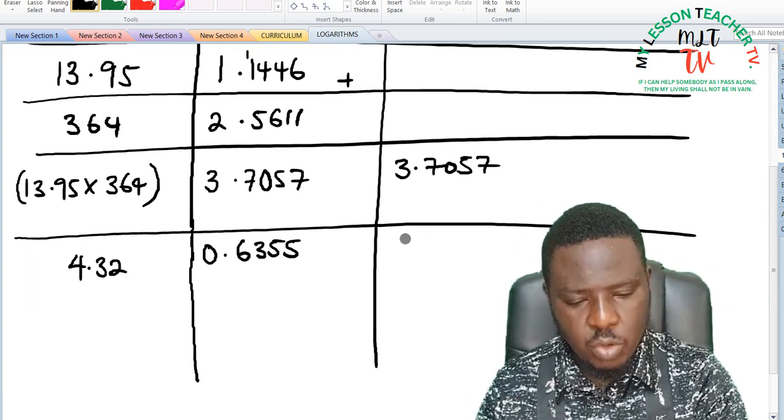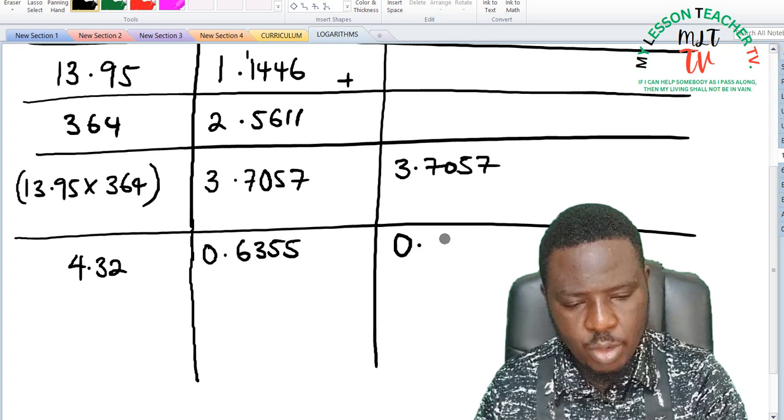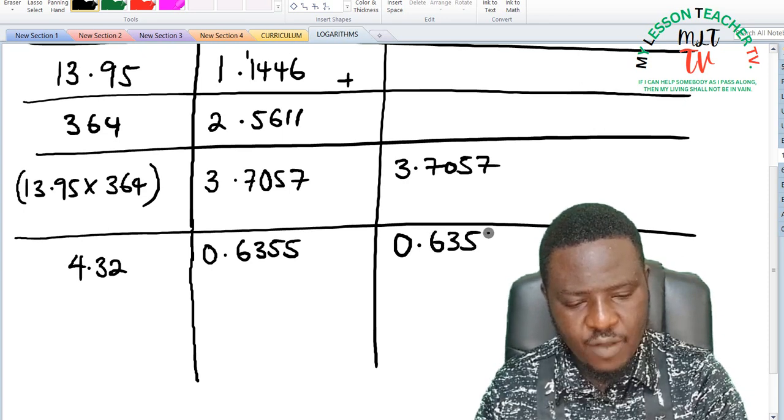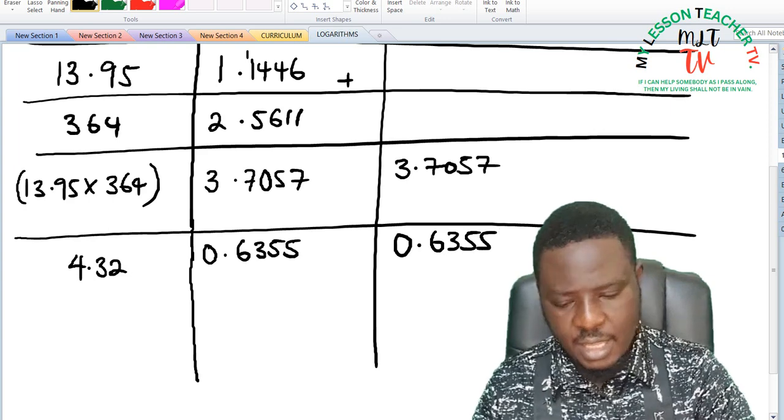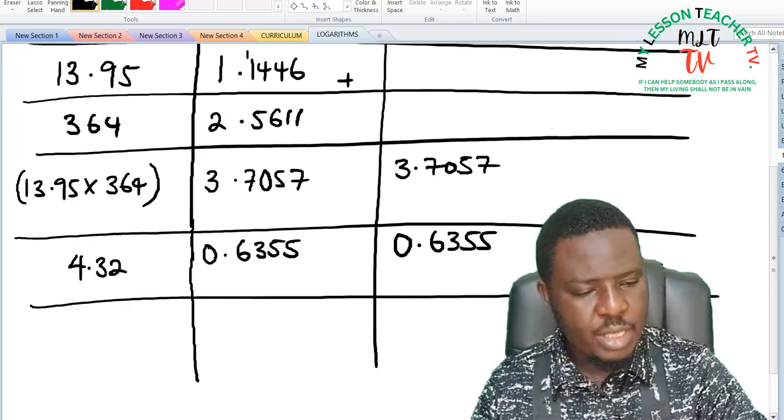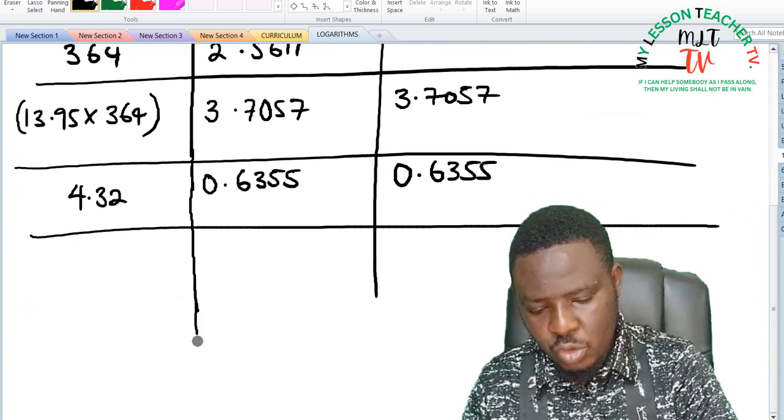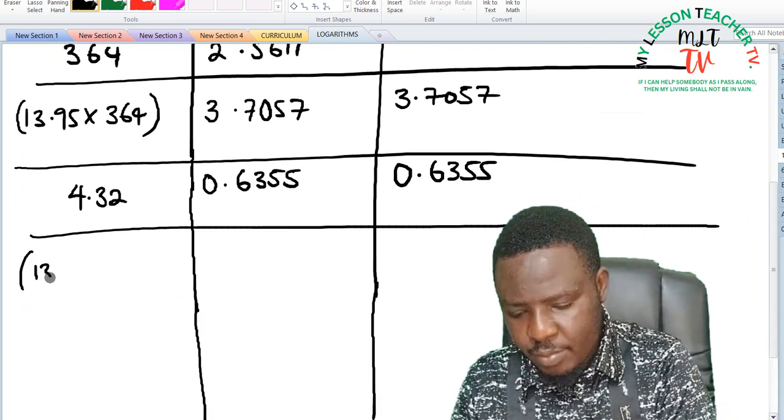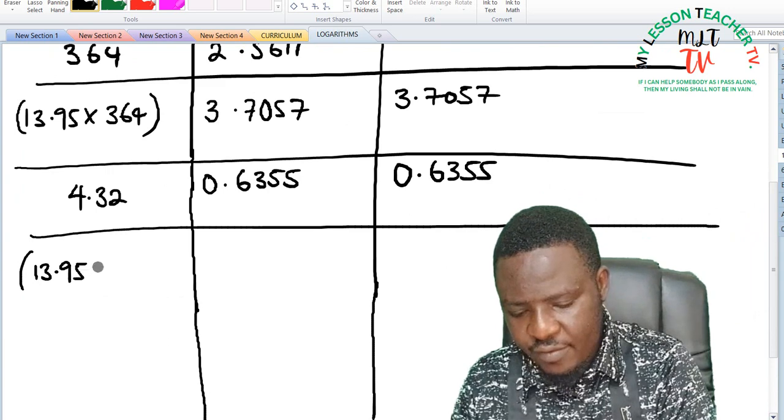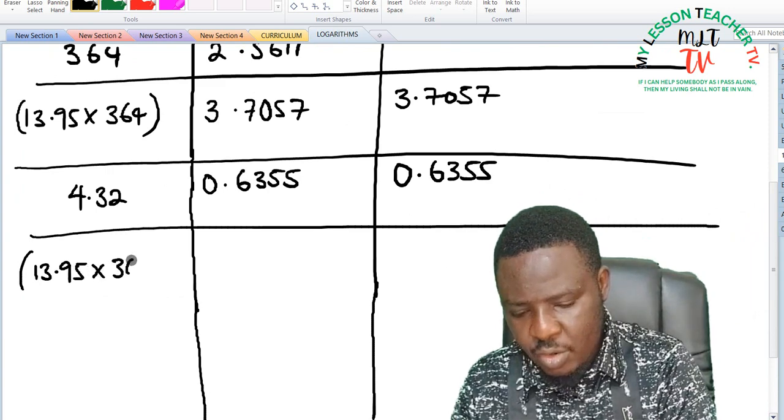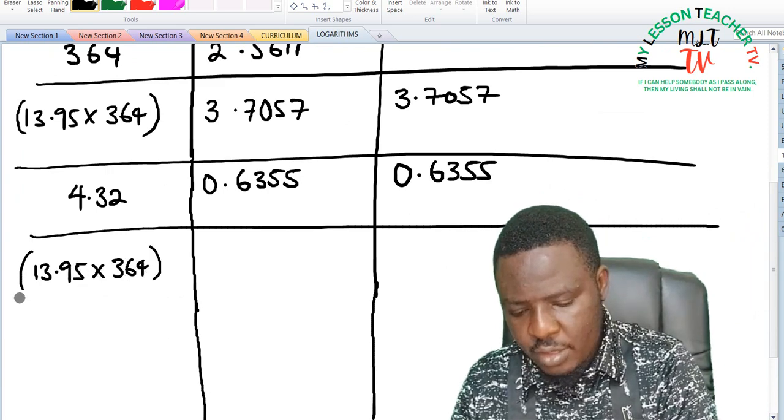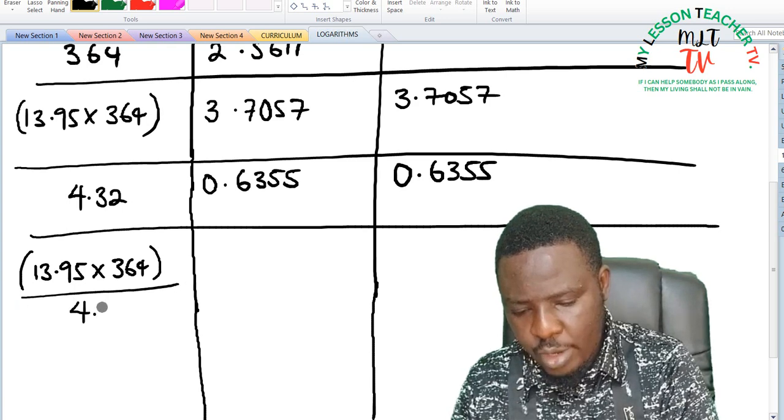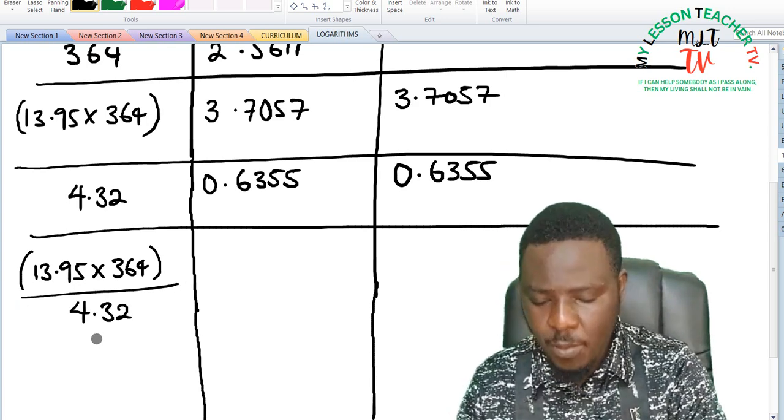Now that we have gotten the value for log 4.32, we will then shift it to the top column which is 0.6355. The next step is to then do the division. So we then have 13.95 times 364 divided by 4.32 on that number.